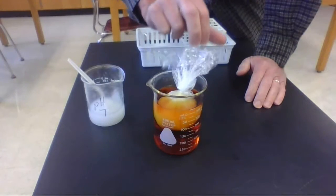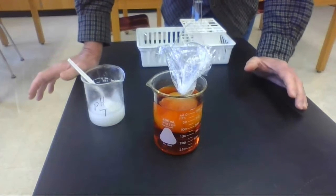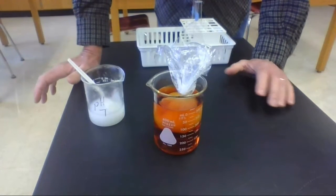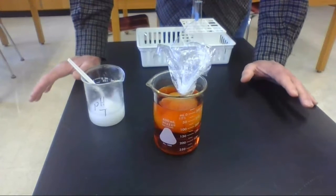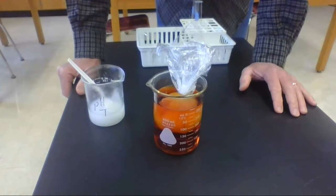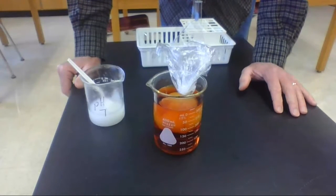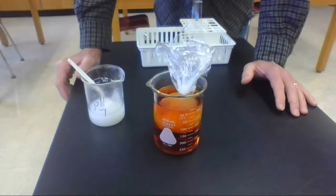And what we want to find out is, is the baggie permeable to the iodine or the water or the starch? And if so, is it a decent model of a cell? So what we're going to do is let this sit overnight. And we'll come back and take a look at it, and see if anything's happened to give us some evidence.